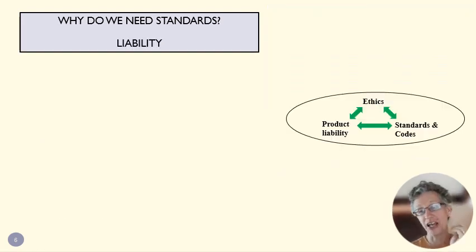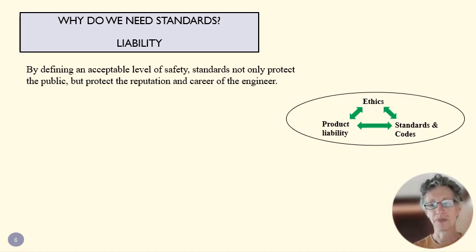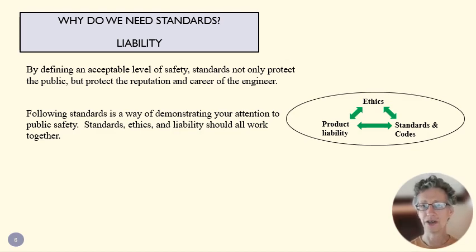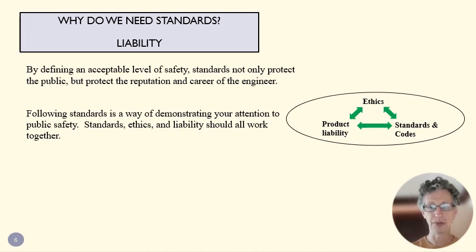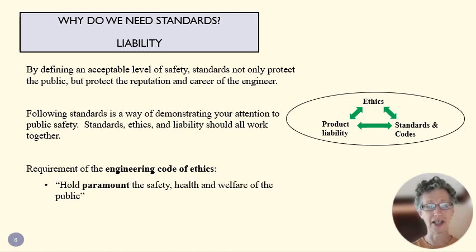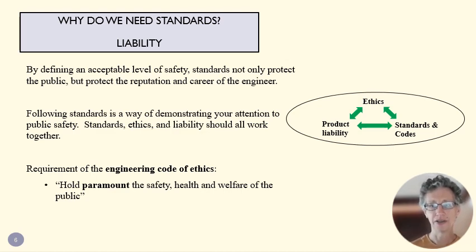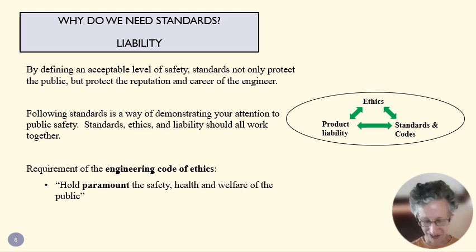The other side of safety is liability. As liability laws developed, they started to say that if you build a boiler and it explodes, you're responsible for the consequences. So it was in industry's self-interest to start regulating how things were built and what processes were followed. On the flip side, the engineering code of ethics says that we are to hold paramount the safety, health, and welfare of the public. Liability is in our interest as engineers, but it's also in the interest of the public that we produce products that don't cause mass harm.